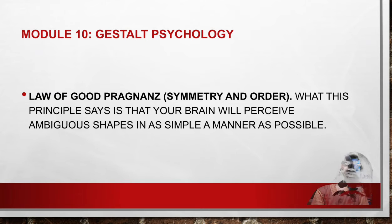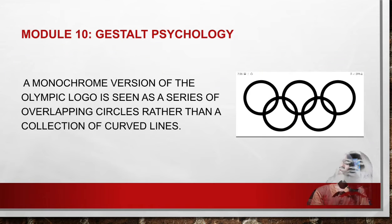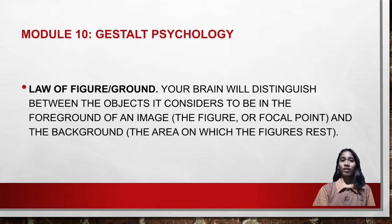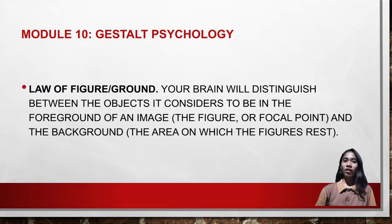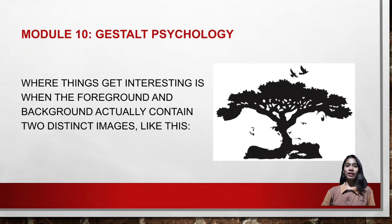The fifth law is the law of Prägnanz, or symmetry and order. This principle says that your brain will perceive ambiguous shapes in the simplest way possible. For example, a monochrome version of the Olympic logo is seen as a series of overlapping circles rather than a collection of curved lines. The sixth and last law is the law of figure and ground. Your brain distinguishes between objects in the foreground — the figure or focal point — and the background, the area on which the figures rest. Things get interesting when the foreground and background contain two distinct images.